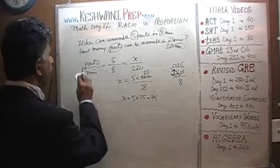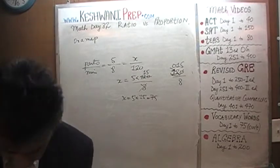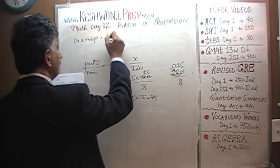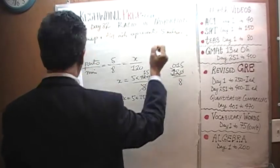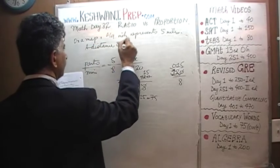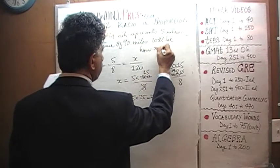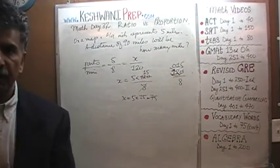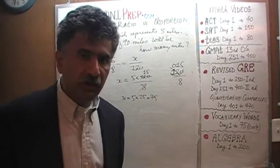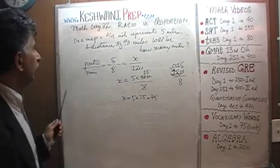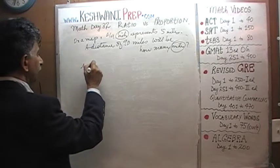We are told that on a map, a quarter of an inch represents five miles. The question is: a distance of ninety miles will be represented on the map by a line segment how many inches long? So what two items are we dealing with here? Always figure out the two items you are dealing with in a proportion problem. Here we are dealing with inches and miles. That's how we are going to set it up — inches and miles.